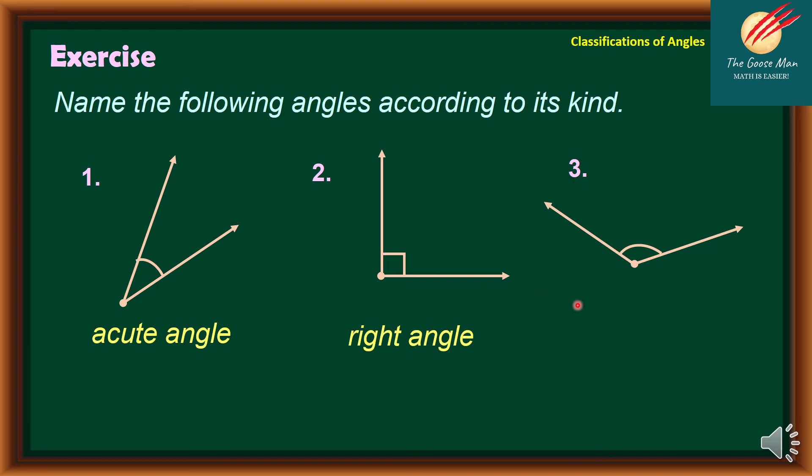And finally, number three. It seems this is more than 90 degrees. If it is an angle that measures more than 90 degrees but less than 180 degrees, this is actually an obtuse angle.